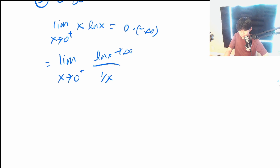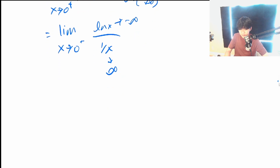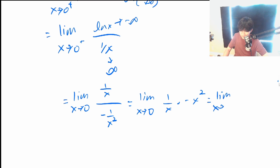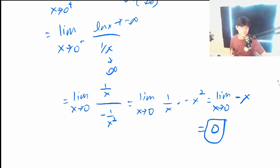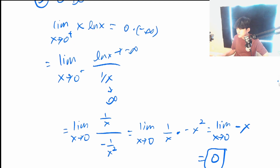This is now an indeterminate form where we can use the standard L'Hôpital's rule, taking the derivatives of the numerator and denominator individually. So it'll be (1/x) over (−1/x²), which equals the limit as x goes to 0 of (1/x)·(−x²) = −x, which goes to 0. This is a nice little problem that shows how the 0·∞ form can be forced into a usable L'Hôpital's rule format.